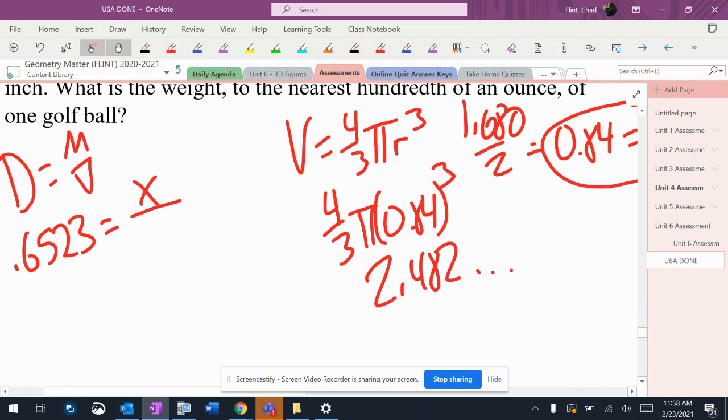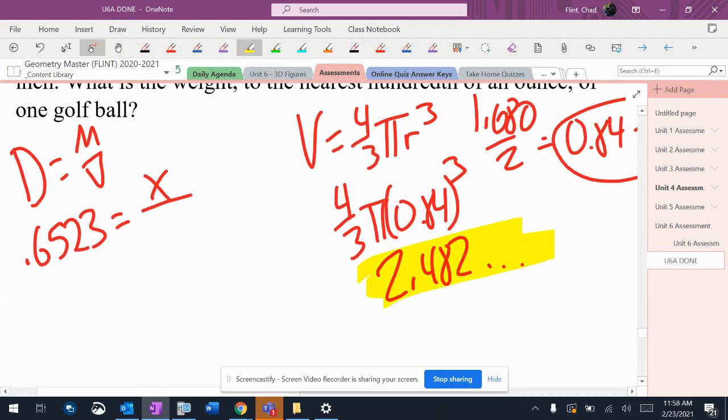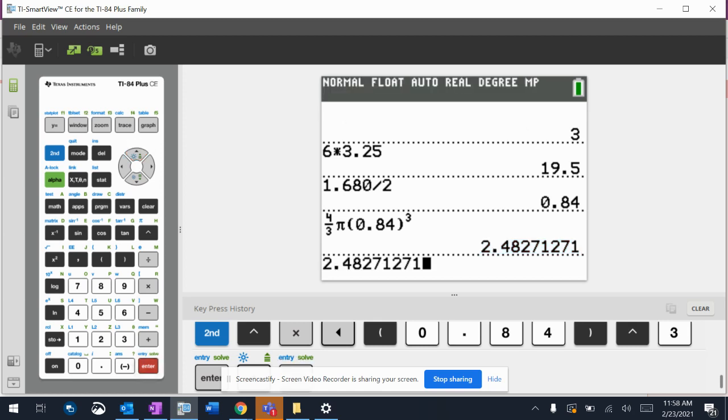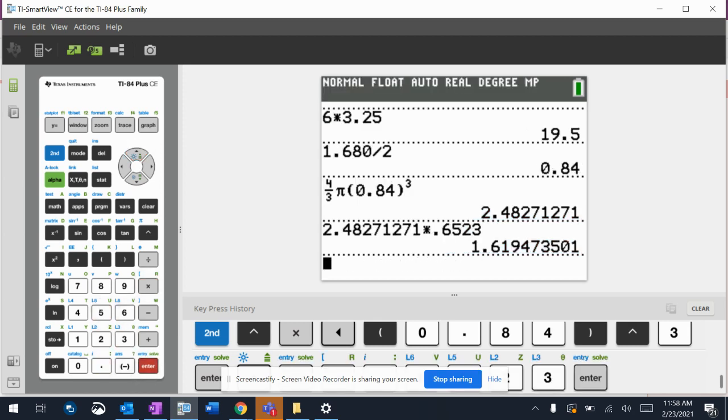So now that number, and I'm not going to mess with it, I'm going to leave it. That number should go right there. And then I'm going to cross multiply, and I'm going to get x equals that number right there in yellow times the 0.6523. So that number times 0.6523. And I should get 1.619.